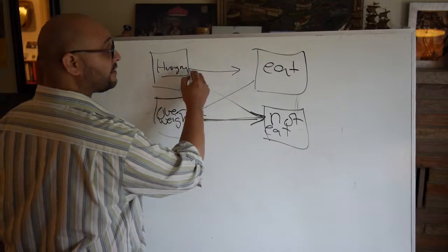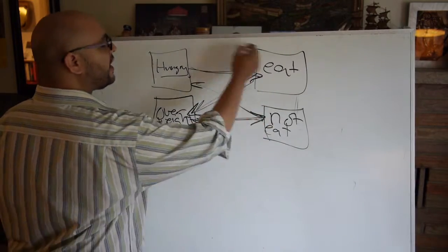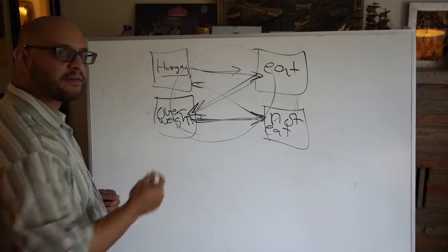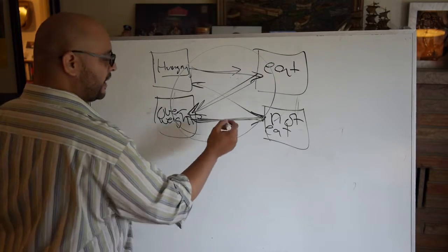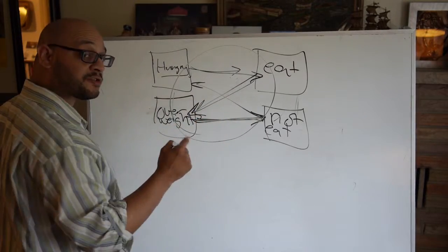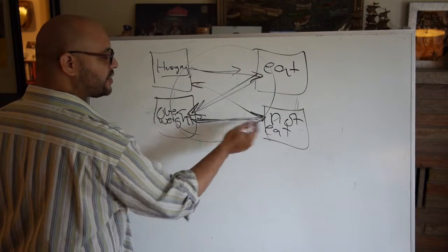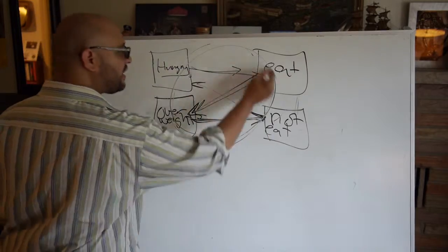So what happens in these structures is that you're hungry, so you eat, but you want to lose weight because you're overweight. So you diet or you don't eat. Then you get hungry and so you eat. But then you want to lose weight because you're overweight and it's an endless cycle, right? It's oscillation. It goes back and forth, back and forth.